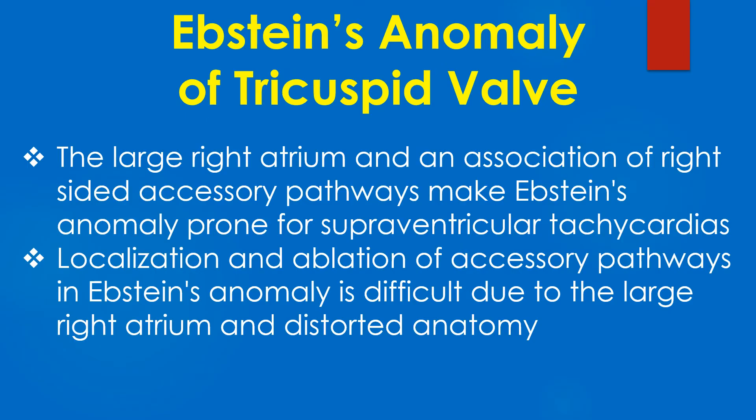The large right atrium and association of right-sided accessory pathways make Ebstein's anomaly prone to supraventricular tachycardias. Localization and ablation of accessory pathways in Ebstein's anomaly is difficult due to the large right atrium and distorted anatomy.